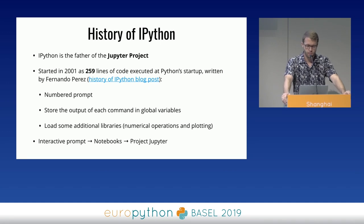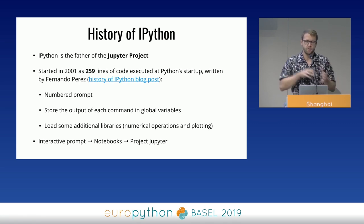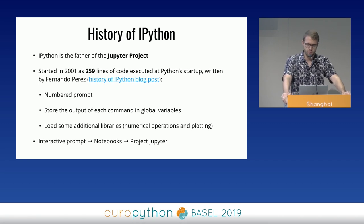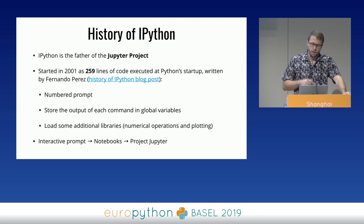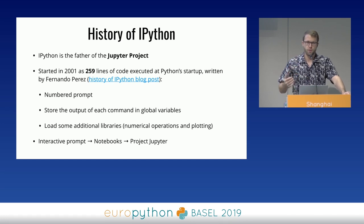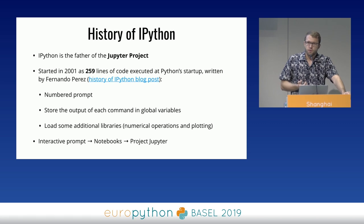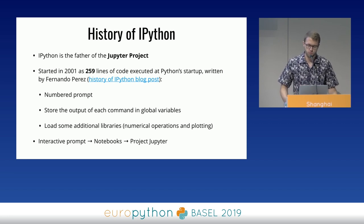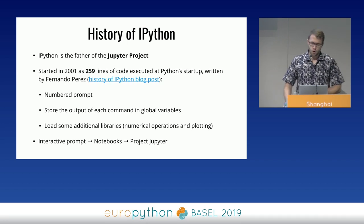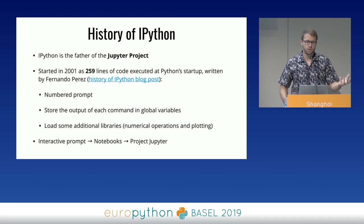So what is IPython exactly? For those of you who never heard about it, IPython is the father of the Jupyter project. IPython was initially created as 259 lines of code by Fernando Perez in 2001. All it did at that time was display a numbered prompt, store the input of each command in a global variable, and import some libraries for mathematical operations and plotting. It's been around for over 18 years. Initially it was just an interactive prompt for Python. Later it was turned into IPython notebooks to make data analysis easier. Then project Jupyter was born — the idea was to decouple the notebook part from the engine part so people could use notebooks with different programming languages.